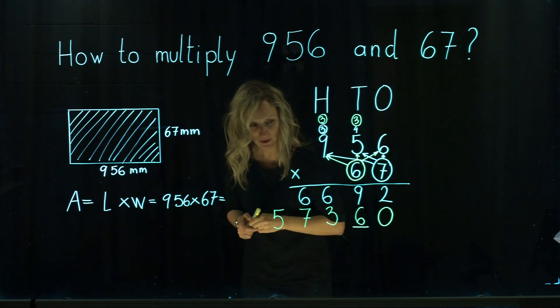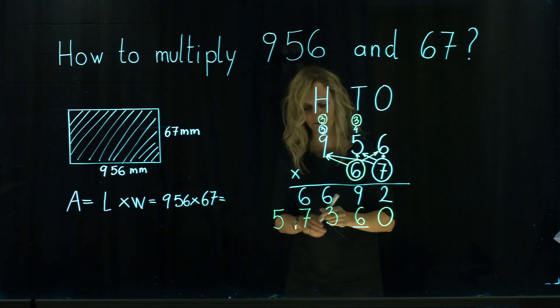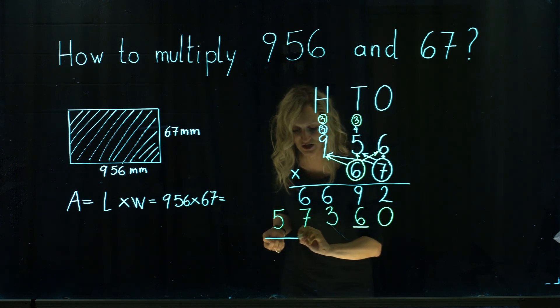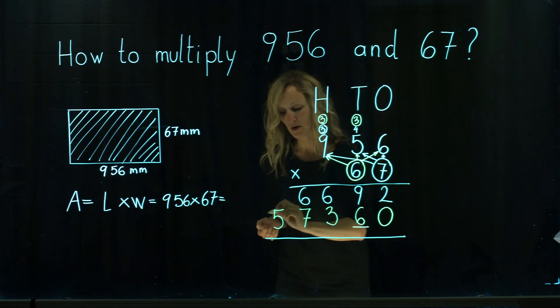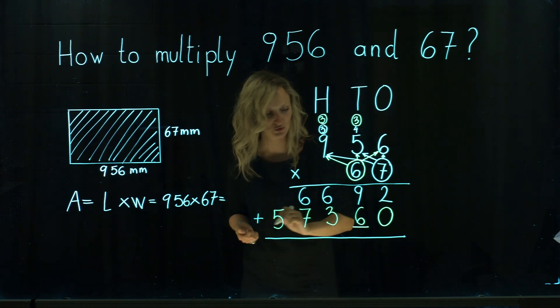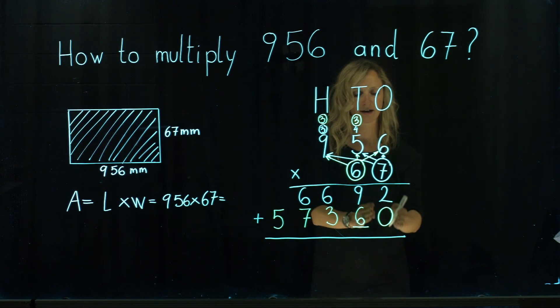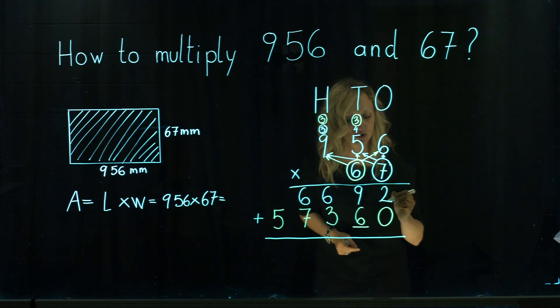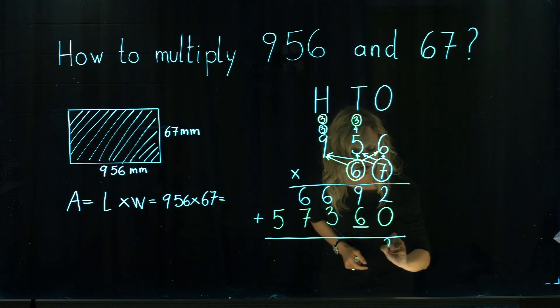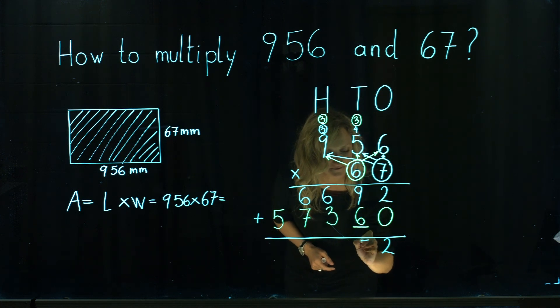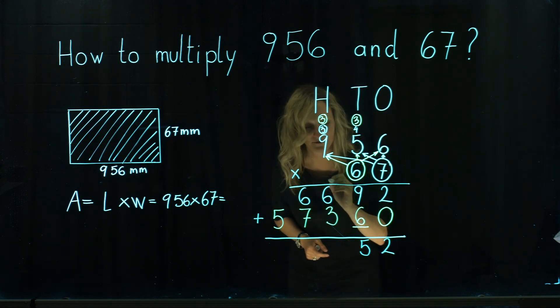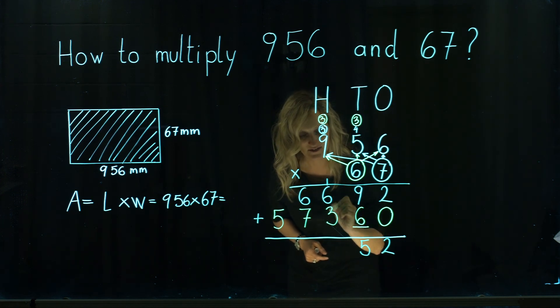When we multiply each number of the second number by each digit in the top number, we then add those two rows. And we go column by column. 2 plus 0 is 2. 9 plus 6 is 15. 5 goes under. We carry over 1.